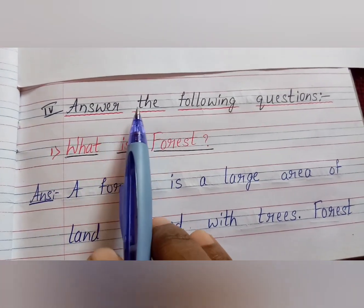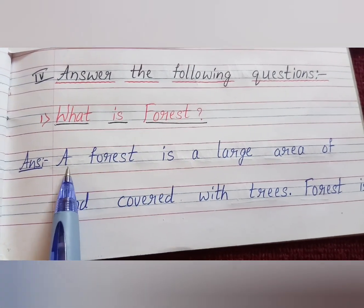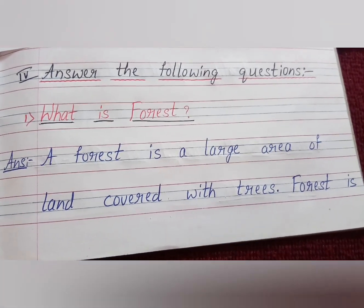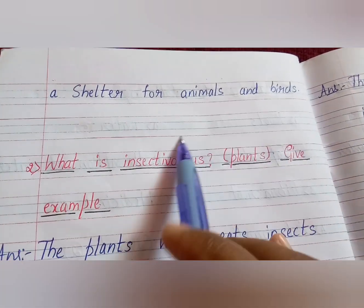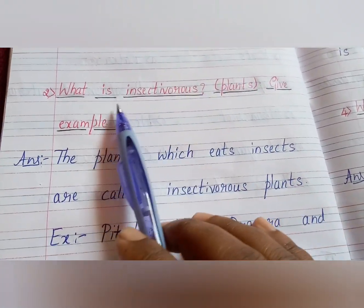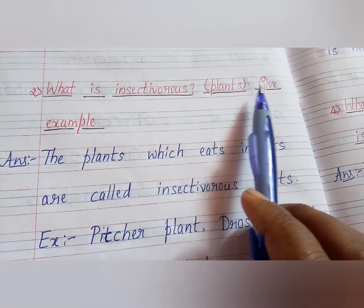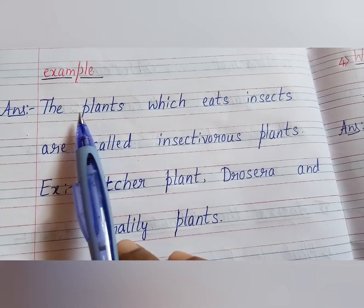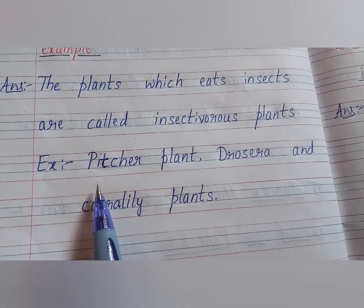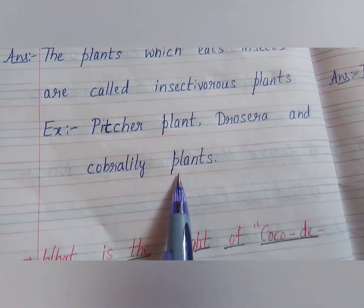Next is the fourth section: answer the following questions. First question: what is a forest? A forest is a large area of land covered with trees. A forest is a shelter for animals and birds. Second question: what are insectivorous plants? Give an example. The plants which eat insects are called insectivorous plants. Examples are pitcher plant, Drosera, and cobra lily plants.